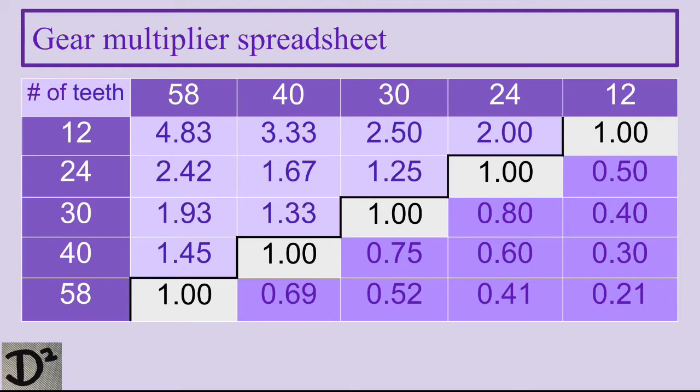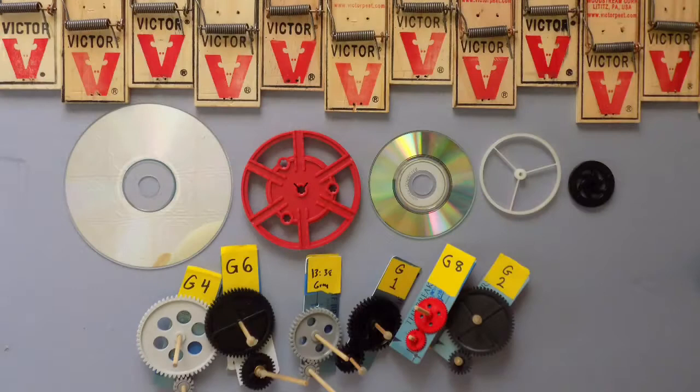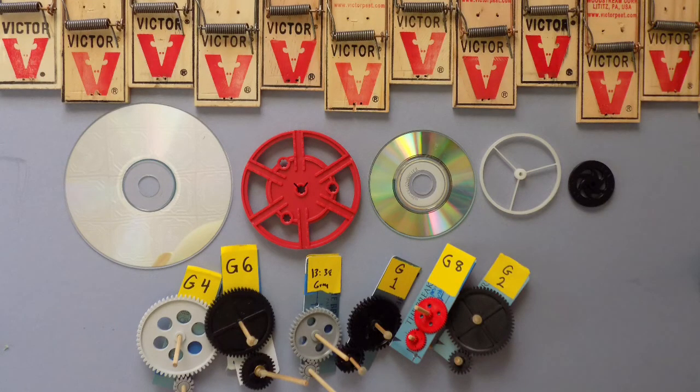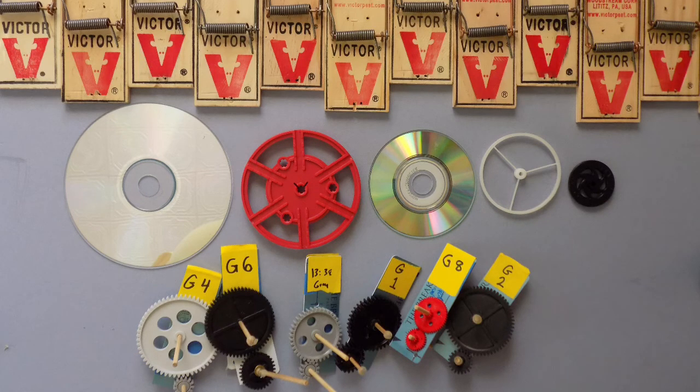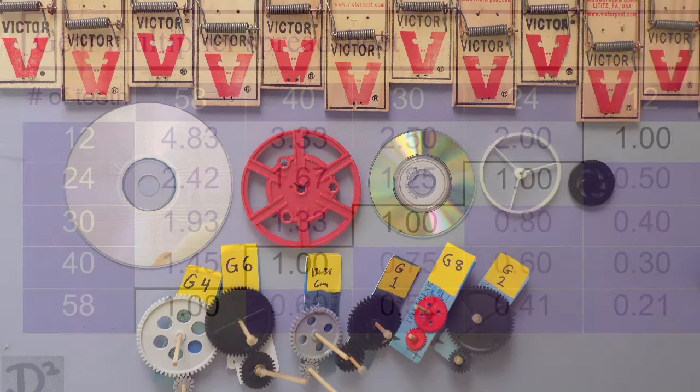These simple calculations illustrate that you can determine the performance of a mousetrap car by making predictions using math before you build. Work like an engineer. Use math and be deliberate in the components that you select to create the mousetrap car that you need, because it matters. There are many variables that affect the performance of the mousetrap car, and there are trade-offs that you make with each option that you choose.